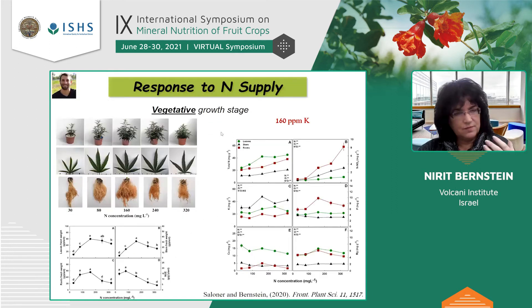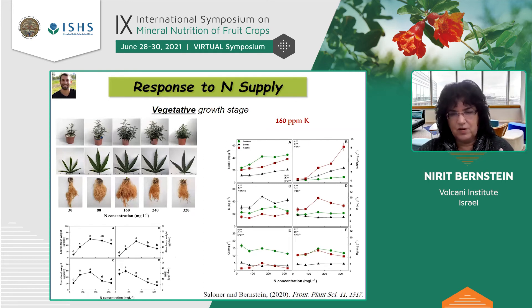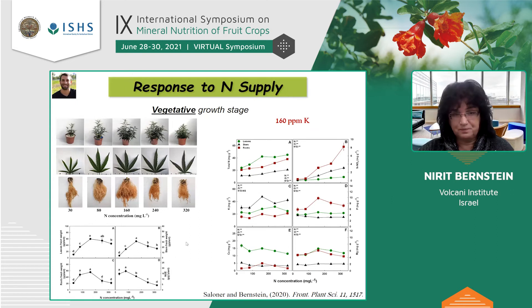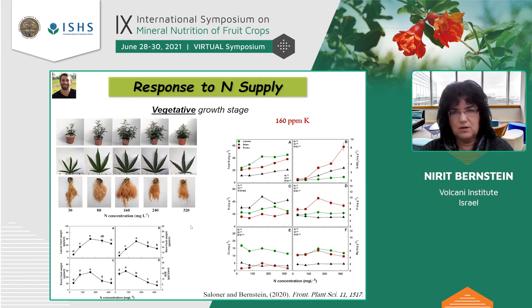What about nitrogen? For the vegetative growth stage, we identified an optimum range: 30 ppm was in the deficiency range and 320 ppm was in the toxicity range. When we looked at biomass production, somewhere around 160 ppm is what we recommend as an optimum, where plant morphology and function were optimal.